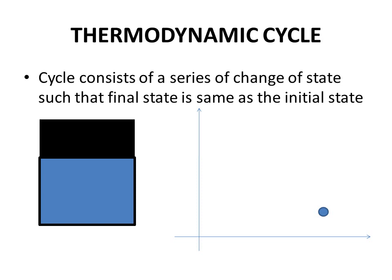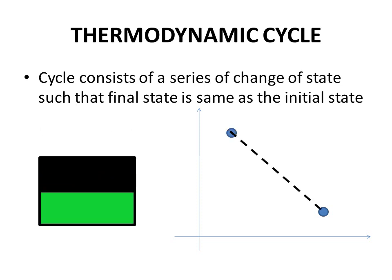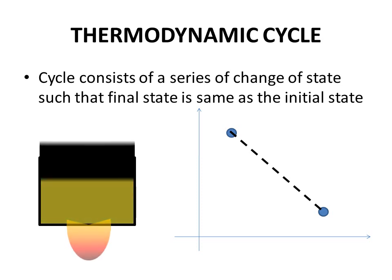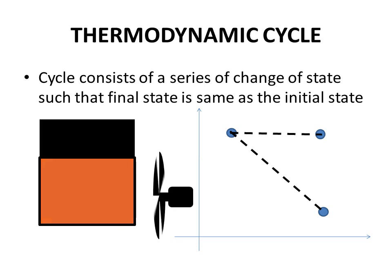A thermodynamic cycle consists of a series of changes of state such that the final state is the same as the initial state. Processes 1, 2, and 3 together constitute a thermodynamic cycle since the initial and final points are the same.